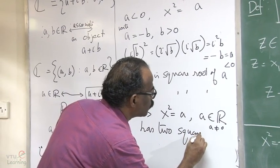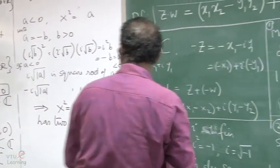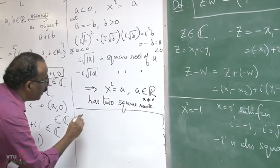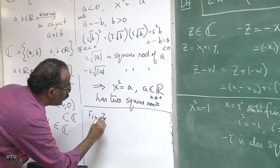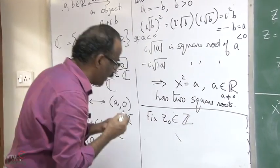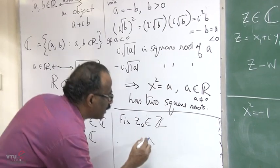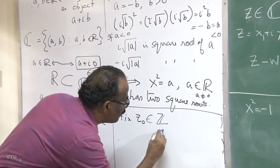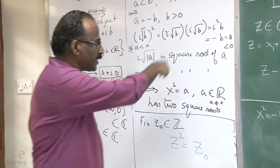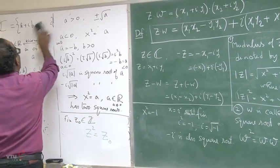More generally, for any z₀ in C you can solve z² = z₀ and find the two square roots. I will not do all those exercises here, as I need to cover the main topics, but please go and work out all the details of how to compute them.